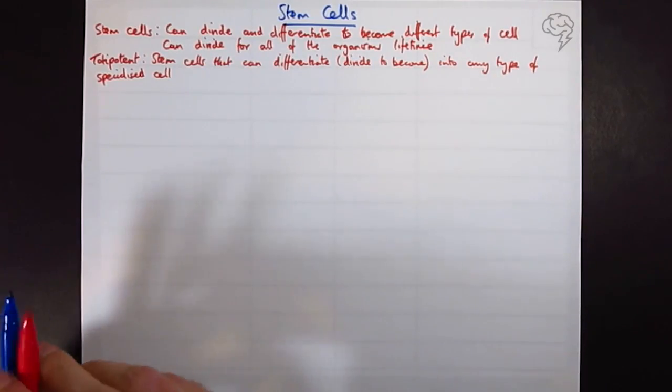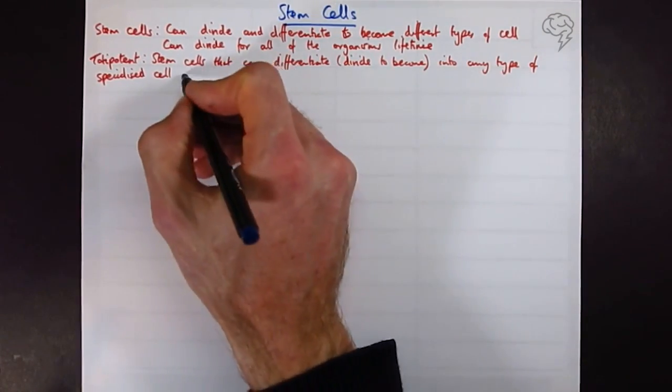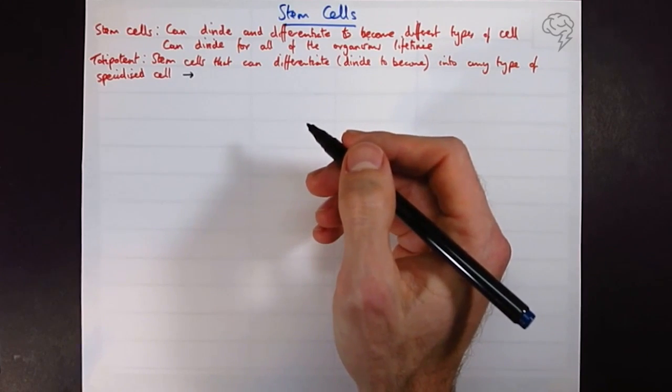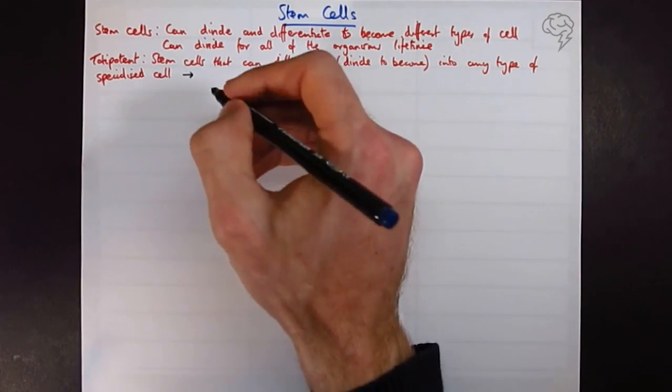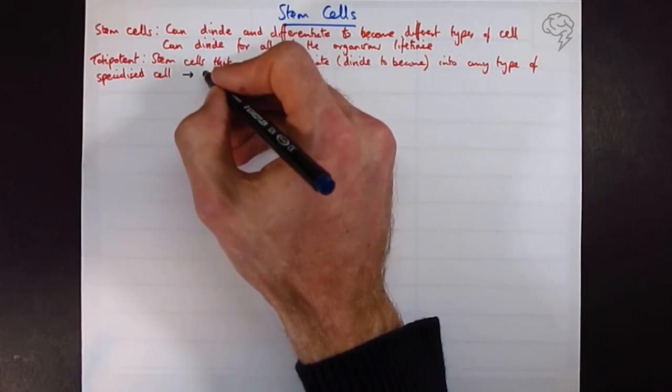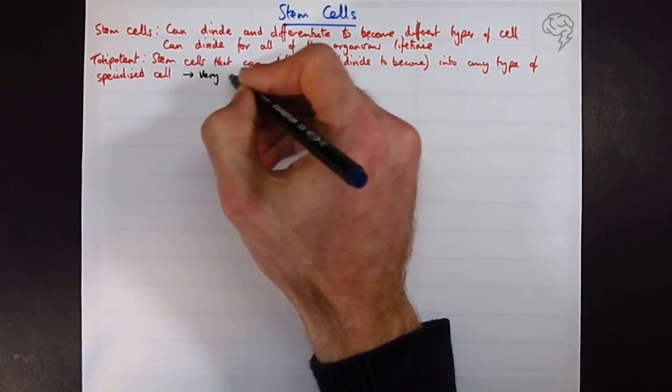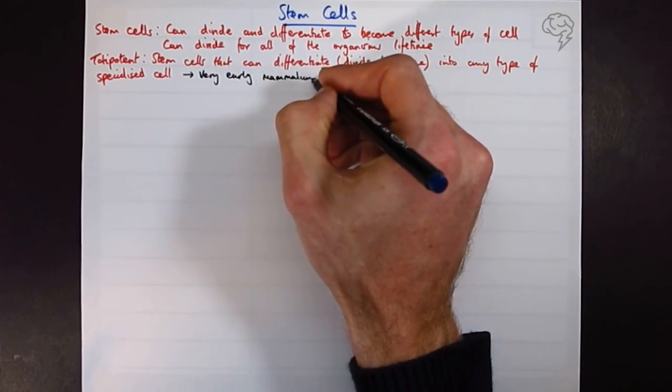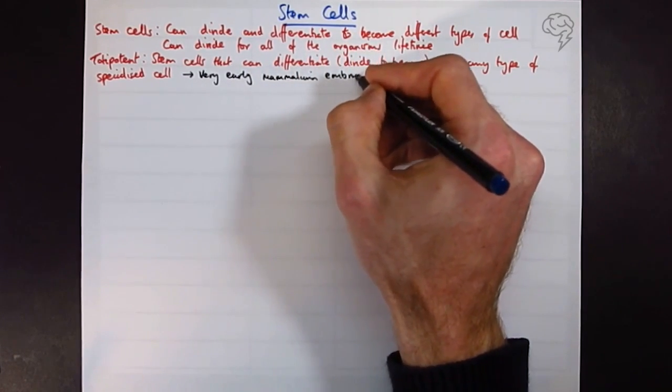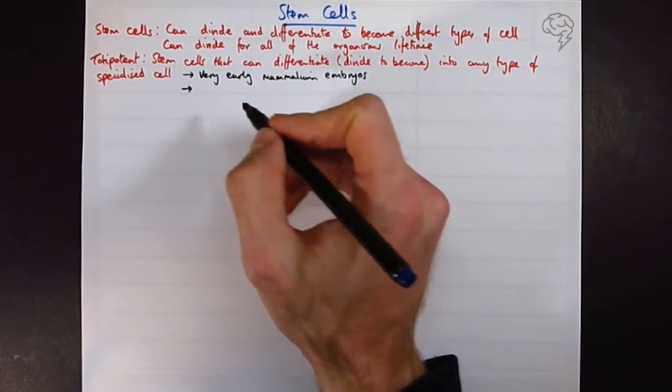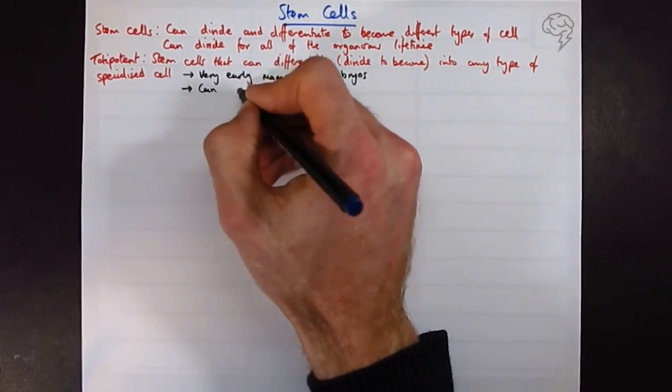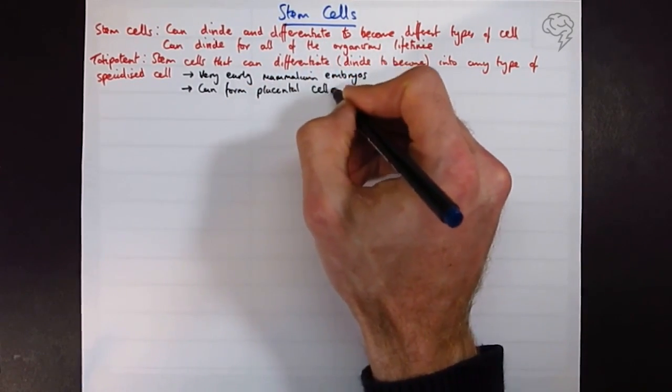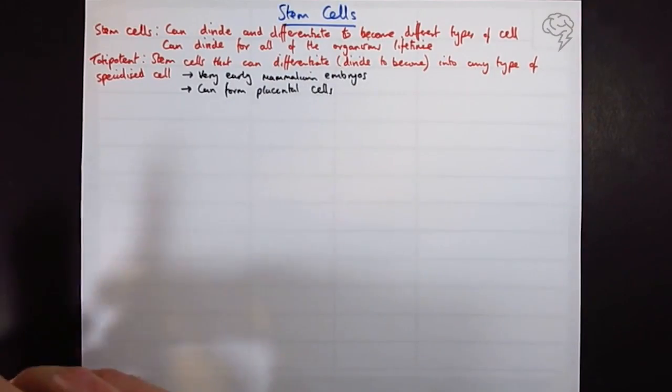So where are we going to find totipotent stem cells? Well, we're going to find them in early embryos. If we're talking about mammals, which is generally where these questions are going to go, plants have many more totipotent stem cells, but in terms of mammals we're going to find them in very early mammalian embryos. So first few divisions really. They can form placental cells, they can form any type of cell including placental cells.